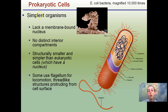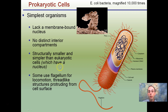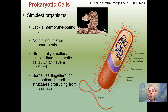They're simple organisms because they lack membrane-bound organelles and have no distinct internal compartments. Those are found in eukaryotic cells. For example, if you see a nucleus, that's going to be a eukaryotic cell. Prokaryotes still do contain DNA, but it's not encapsulated in a nucleus.